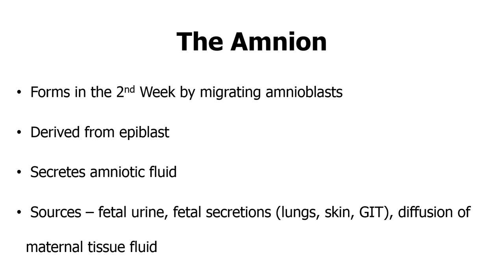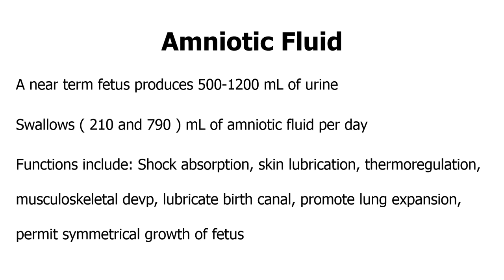The amnion forms within the second week of development by migrating amnioblasts and is derived from the epiblast layer. Amniotic fluid comes from either the fetal side or the maternal side. From the maternal side you have diffusion via the placenta. From the fetal side you have production of urine by the fetus, as well as fluid secretions from the lungs, the skin, and the GIT of the fetus.